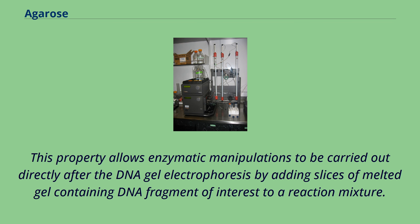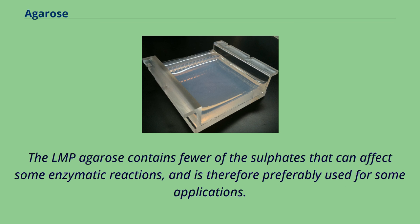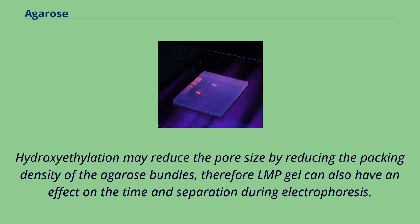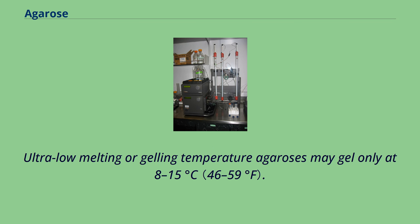This property allows enzymatic manipulations to be carried out directly after DNA gel electrophoresis by adding slices of melted gel containing the DNA fragment of interest to a reaction mixture. The LMP agarose contains fewer of the sulfates that can affect some enzymatic reactions, and is therefore preferably used for some applications. Hydroxyethylation may reduce the pore size by reducing the packing density of the agarose bundles, so LMP gel can also have an effect on the time and separation during electrophoresis. Ultra-low melting or gelling temperature agaroses may gel only at 8–15 degrees Celsius.